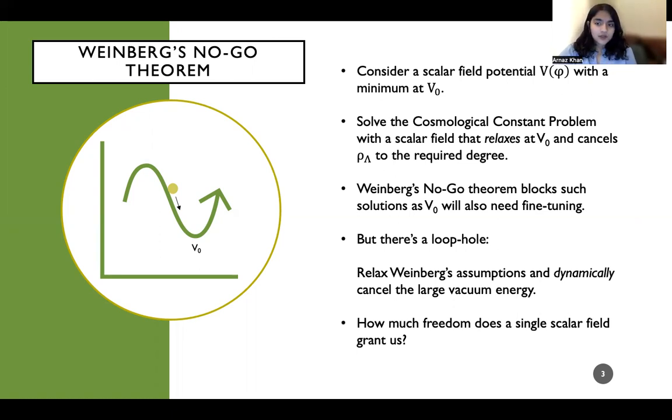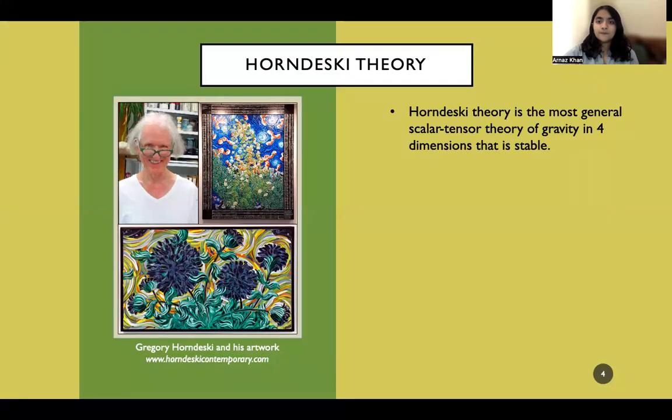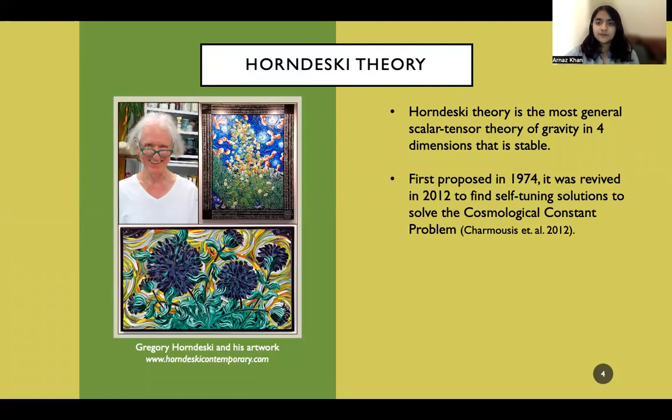How much freedom does a single scalar field actually grant us though in terms of what types of forms of potentials or kinetic functions that we see? Turns out there's already a framework to exploit in order to find this out. Horndeski theory is the most general scalar tensor theory of gravity in four dimensions that is stable. Stable here means that the resulting equations of motions are at most second order, which prevents runaway negative energies. It was first proposed in 1974 by Gregory Horndeski as part of his PhD thesis, but was actually revived just about 10 years ago to find self-tuning solutions to exactly the problem that we've been talking about.